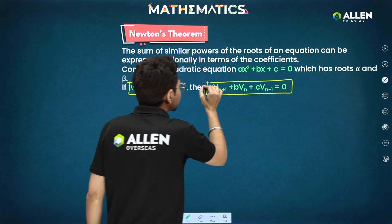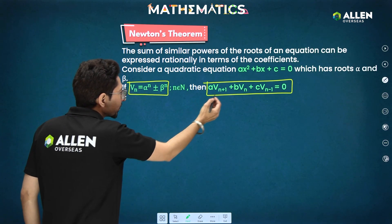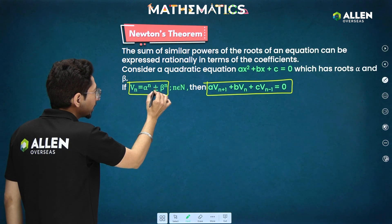then this condition will be valid. Then this part will be valid. Let's see basic part here. What will be vn plus 1? Let's take positive here only, talking about alpha power n plus beta power n.